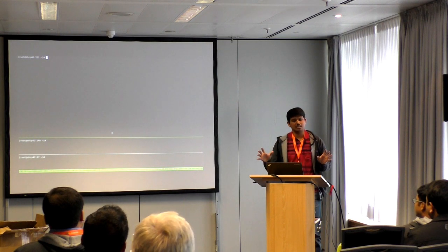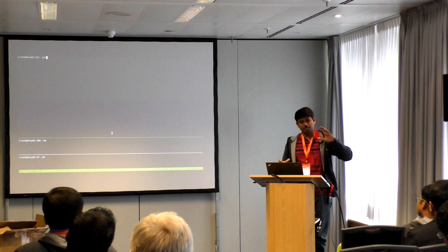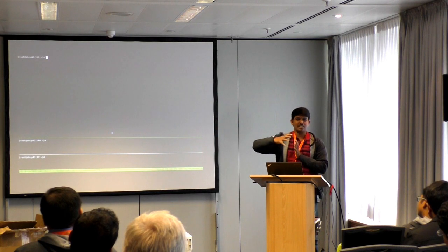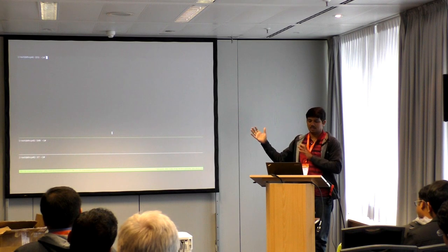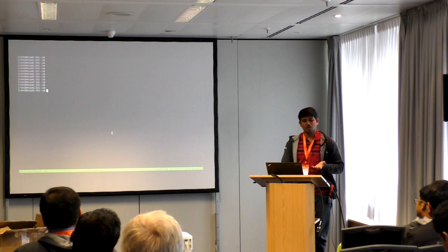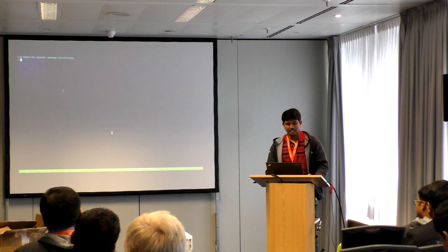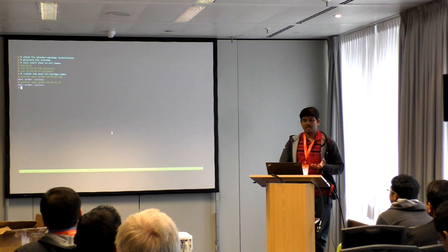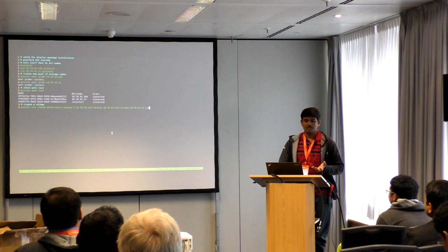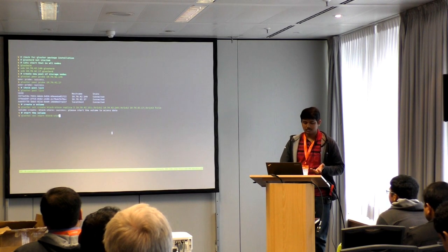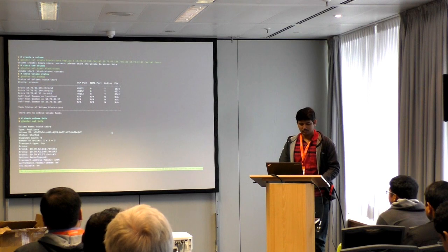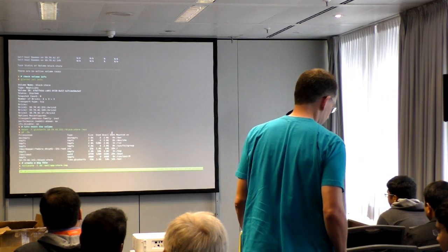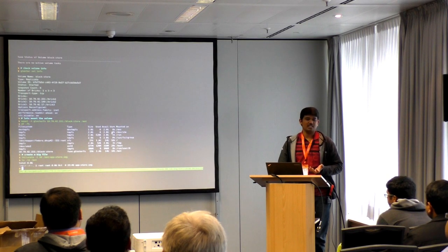For the demo, I have three nodes. The setup is simple: three Gluster nodes which combine to have a volume. We create a file in it and from the client side we discover it as a target device. I'm taking node one, doing the Gluster setup, starting Gluster daemon on all three nodes, doing peer probing, creating a replica-3 volume, and starting the volume. I just mounted the device and created a big file — App Store image — which is 8 GB.